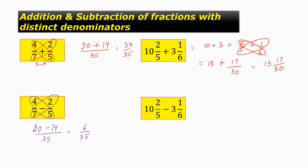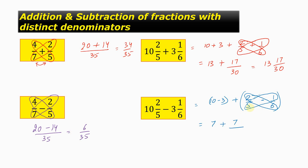We have 10 and 2/5 minus 3 and 1/6. This can be written as 10 minus 3, plus 2/5 minus 1/6. So 10 minus 3 is 7. 2 into 6 is 12, 1 into 5 is 5. So 12 minus 5 will give us 7, divided by 5 into 6 is 30. So the answer can be written as 7 and 7/30.